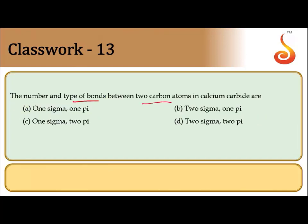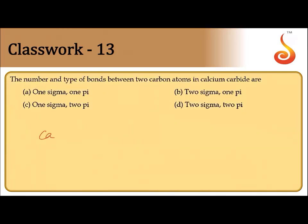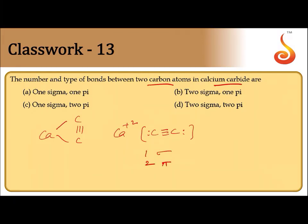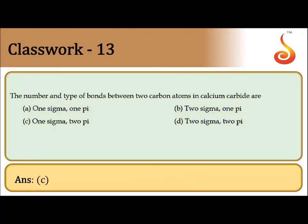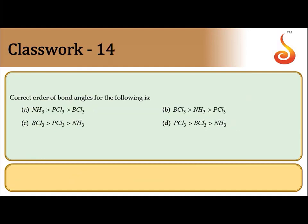The number and types of bonds between the carbon atoms in calcium carbide: calcium carbide is Ca²⁺[C≡C]²⁻, meaning there is a triple bond between the two carbon atoms. A triple bond consists of one sigma bond and two pi bonds. Therefore the answer is option C.